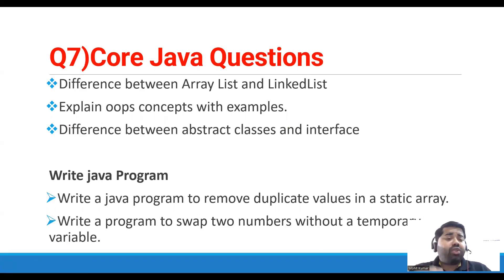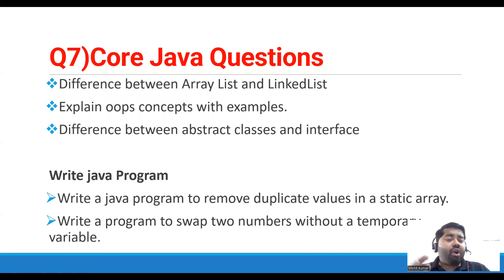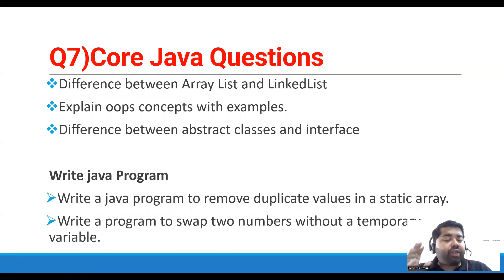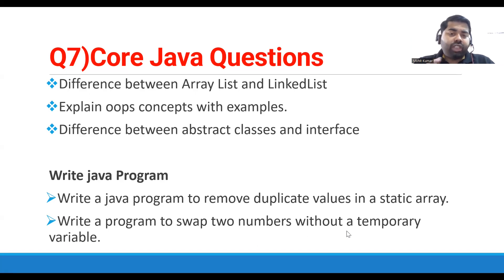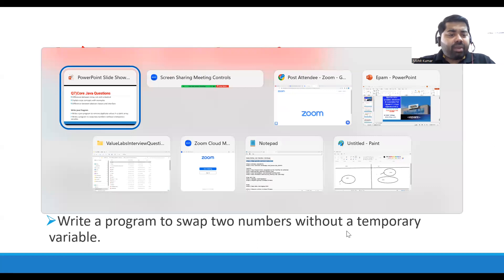Some Java questions were already covered in the previous video, so they are listed here for reference: the difference between ArrayList and LinkedList, OOP concepts with examples, and the difference between abstract class and interface. Additionally, two coding assignments: write a Java program to remove duplicate values from a static array, and write a program to swap two numbers without a temporary variable.